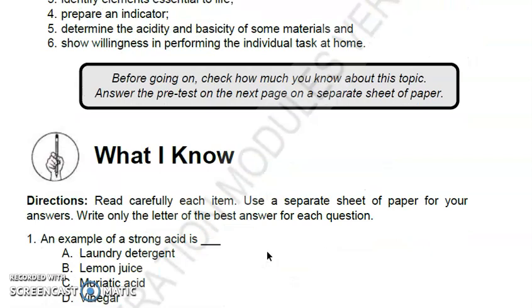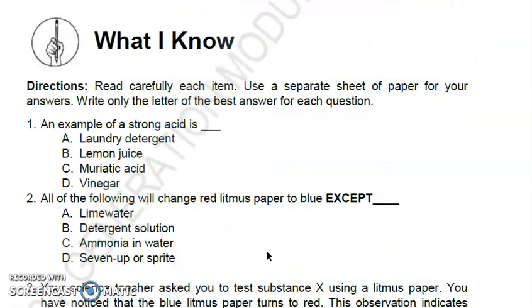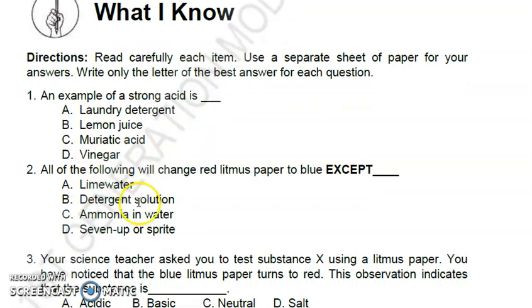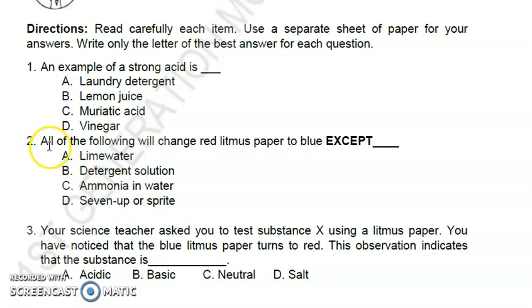Let's start with 'What I Know.' Number one: an example of a strong acid is letter C, muriatic acid. Number two: all of the following will change red litmus paper to blue except - the answer is letter D, 7up or Sprite. Number three: your science teacher asks you to test substance X using litmus paper. You noticed that the blue litmus paper turns to red, indicating that the substance is acidic.